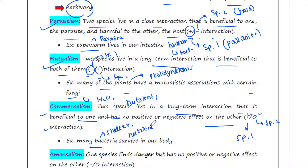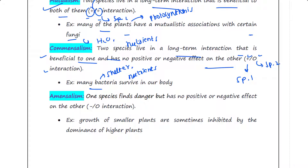For example, many bacteria survive in our body — they get benefit by utilizing shelter and nutrients; however, they don't show any helpful or harmful effect on us.